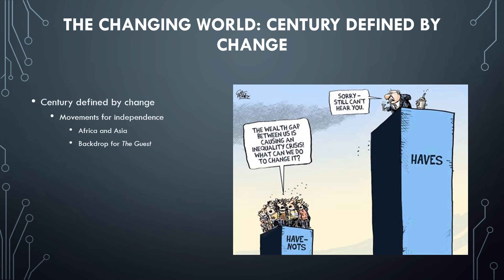In terms of a century defined by change, we have movements for independence — countries that had been dominated by colonialism no longer wanting to be under the control of a foreign power. This will be the setting for The Guest by Albert Camus, particularly in Africa and also in Asia. At the same time, there's this idea of global interdependence — nations seeking control over themselves while also recognizing that because of advances in production and trade, we need each other. This is where we get the term globalization, meaning the world has become more connected.